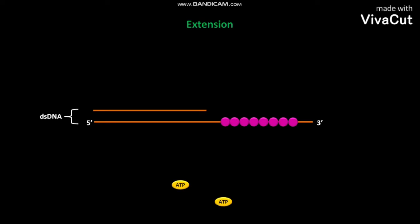After extension, the disassembly step comes. During the disassembly step, the ATP binds to the RecA protein. The bound ATP undergoes hydrolysis to produce ADP and Pi. The ADP, Pi, and RecA protein are then released from the single-stranded DNA.